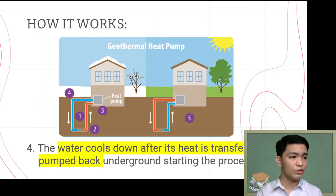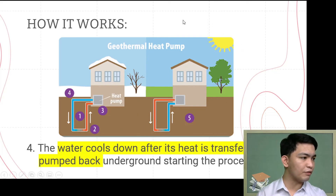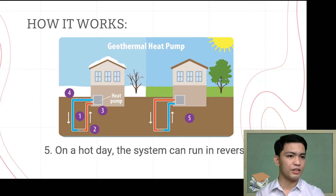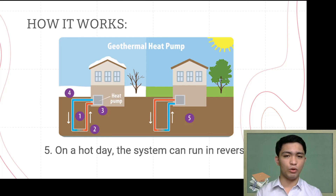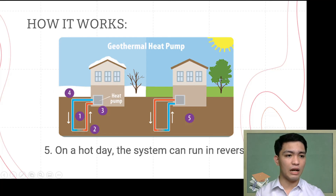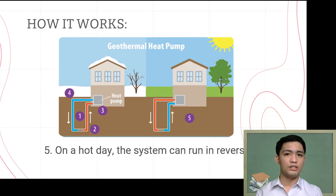After giving off its heat, the water goes back down and is pumped underground again, starting the process over. Unlike the geothermal power plant, this system is not connected to a turbine or generator to produce electricity. Instead, it directly uses the heat from underground to warm the building. During a hot day, the system can run in reverse — the refrigerant absorbs heat from inside the building, carries it underground, transfers the extra heat to the ground, comes back up cooler, absorbs heat again, and the cycle continues.